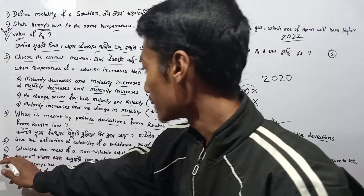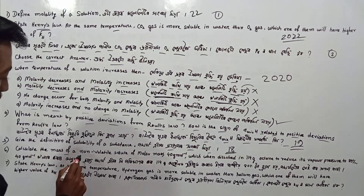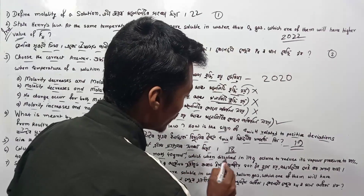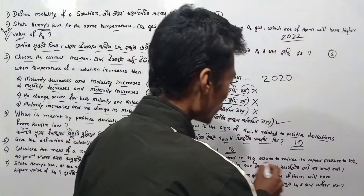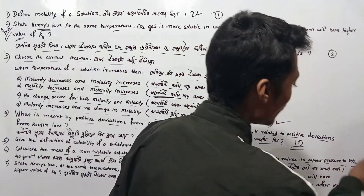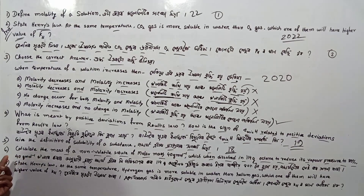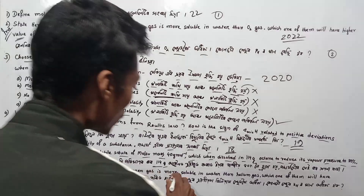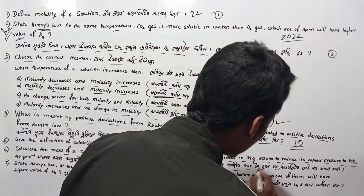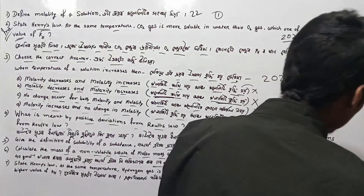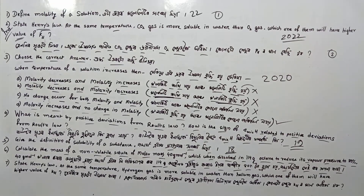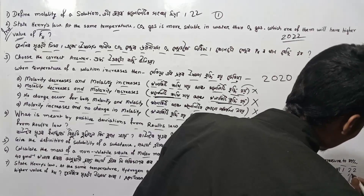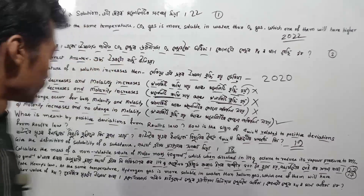Next question: Calculate the mass of a non-volatile solute of molar mass 40 gram per mole, which when dissolved in 114 gram of solvent, reduces its vapor pressure to 80%. The answer is 20. This is from the 2022 exam.